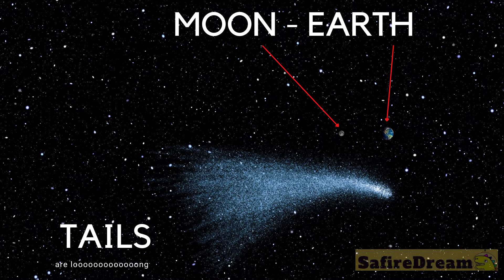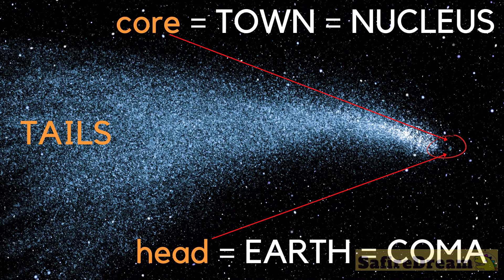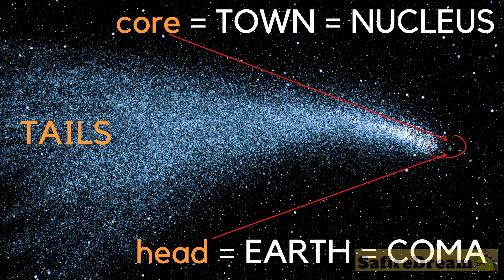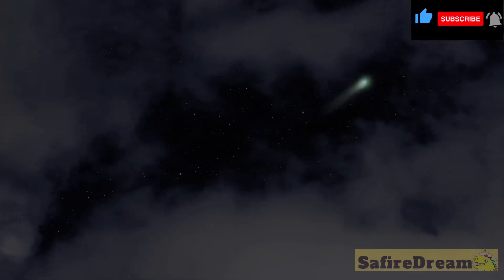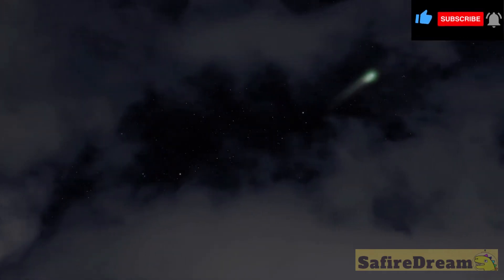So just how big is the comet anyway? Let's add up. The core of the comet is your town. Its glowing coma is Earth, and its tails are several times longer than the distance to the Moon. That's pretty big. Comets can also be much bigger even than that. That's why we can see them when they fly by.